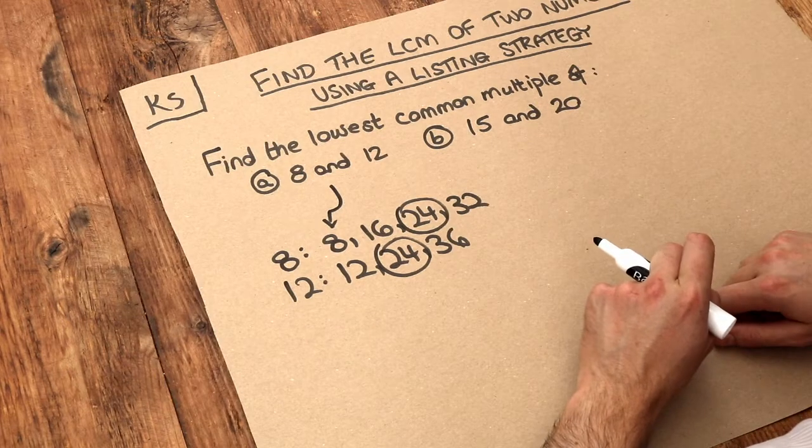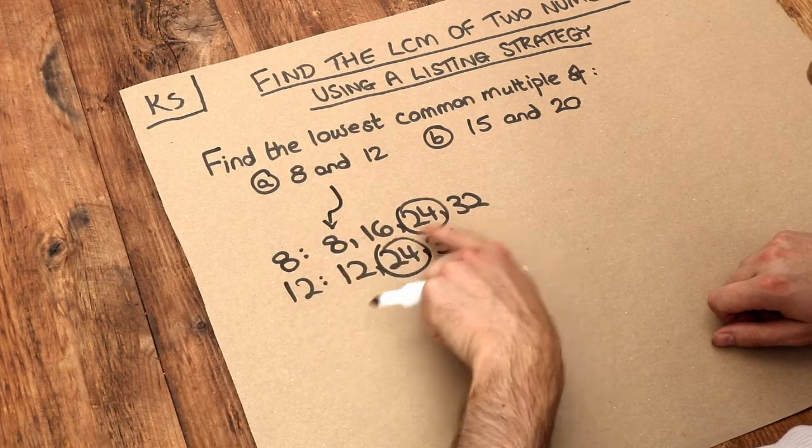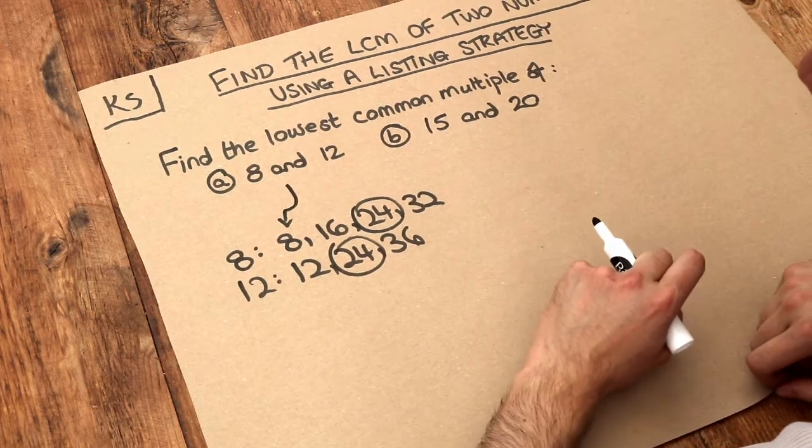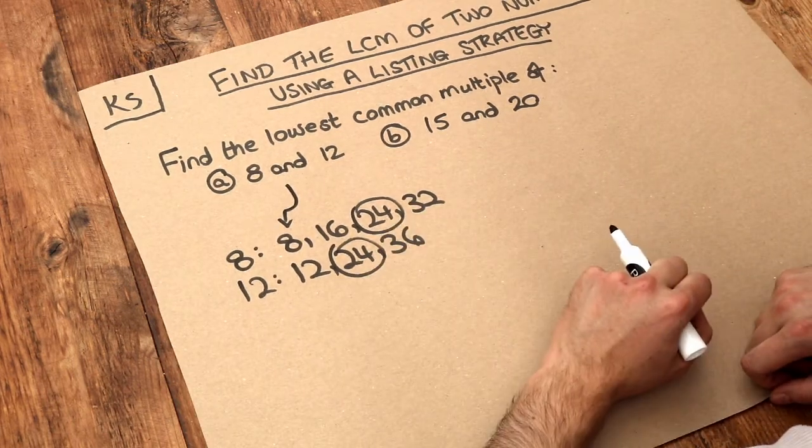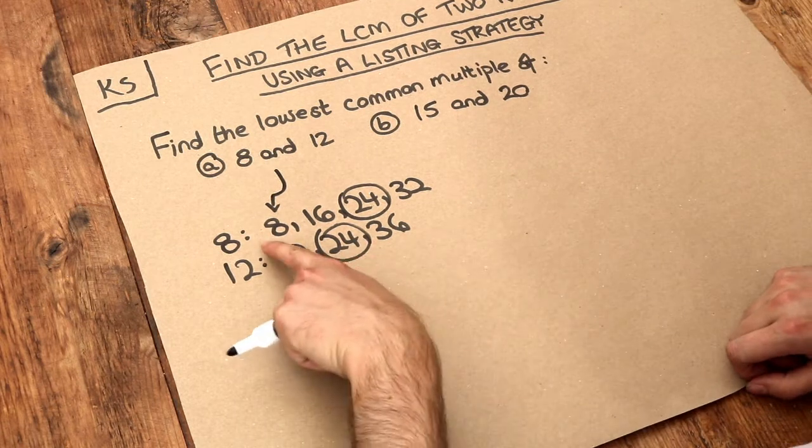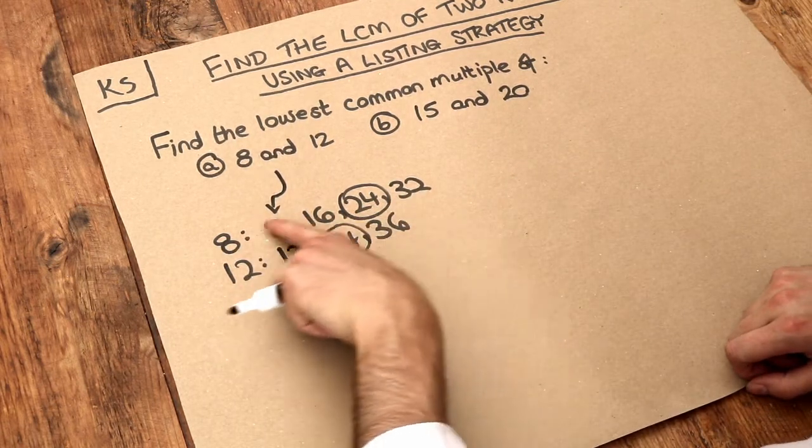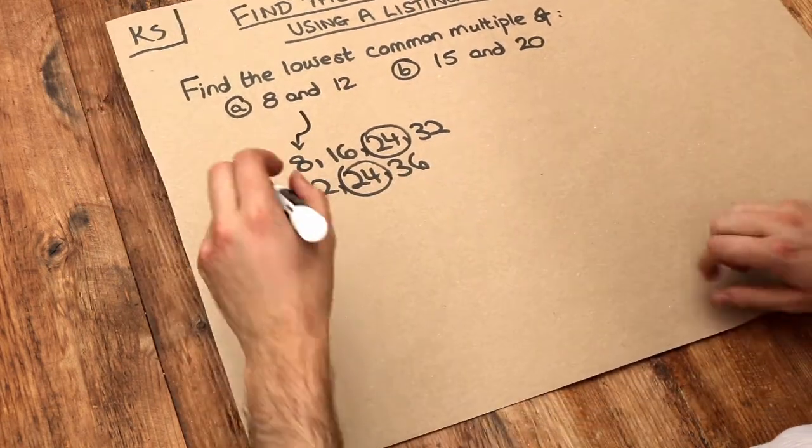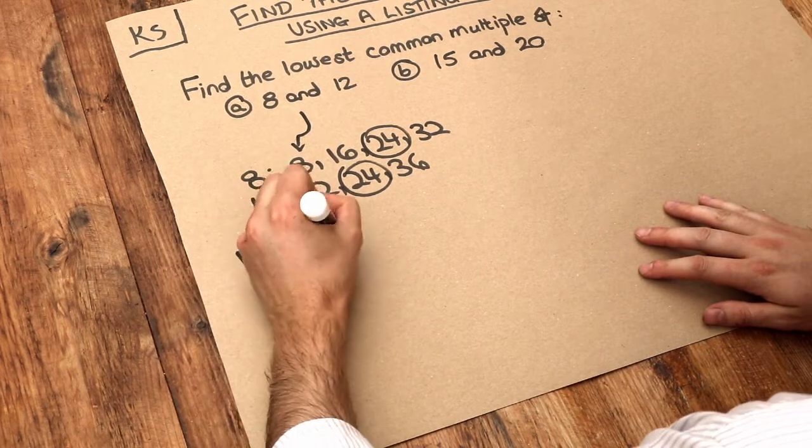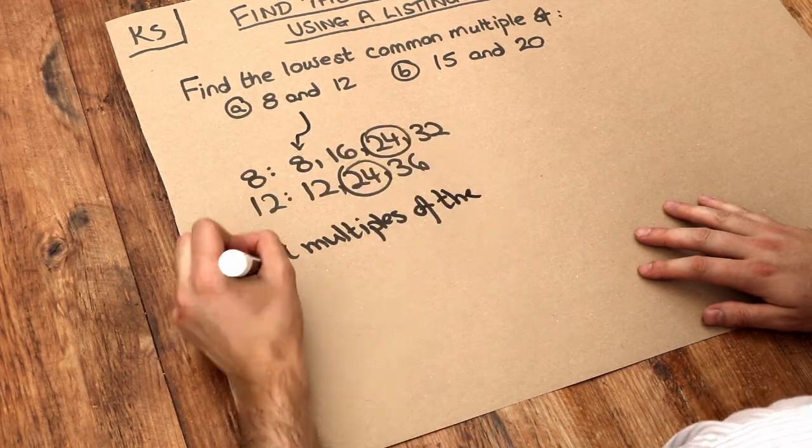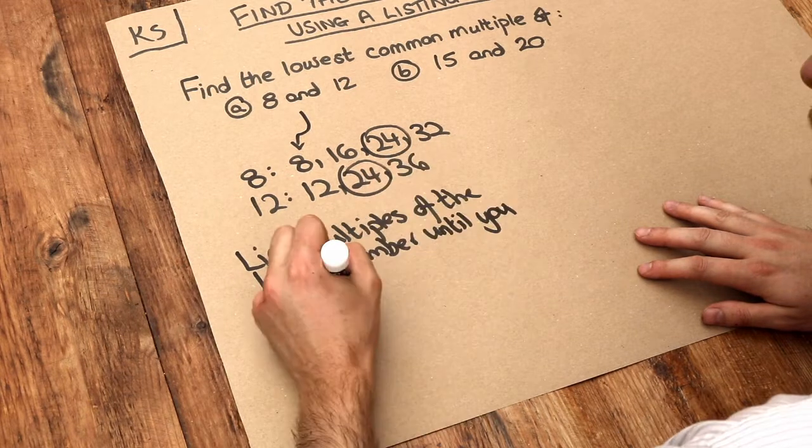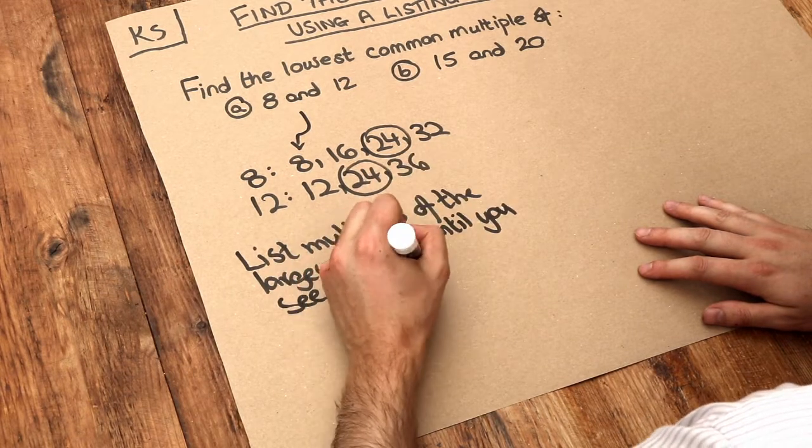So what the strategy is here is that we can list out multiples of both and then just find the smallest number which is common to both. But in fact you don't even need to list the multiples of the smaller number. What I generally do is to list the multiples of the larger number until you see a multiple of the smaller number.